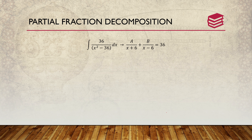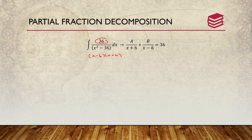Now we move into partial fraction decomposition. In this example, we have a decomposition of A/(x+6) plus B/(x-6) equals the numerator 36 over (x²-36). The denominator x²-36 factors into (x-6)(x+6). Cross-multiplying gives A(x-6) + B(x+6) = 36.